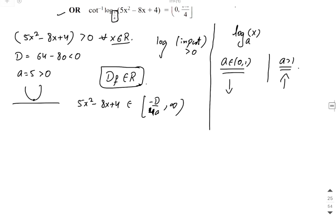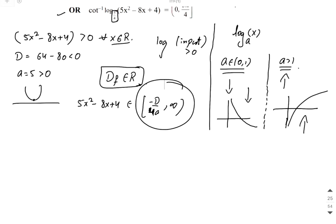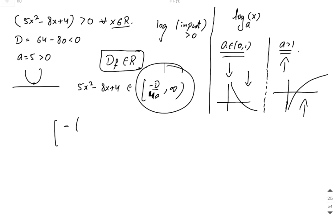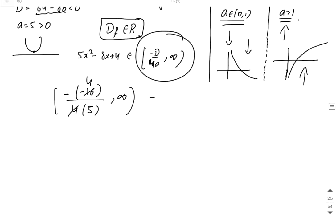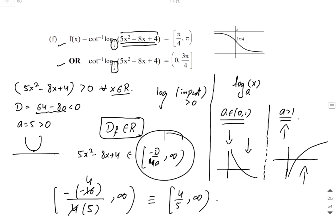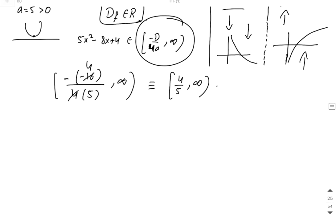The minimum value of the quadratic is minus D by 4a. With discriminant D equal to minus 16, this gives minus of (minus 16) divided by 4 times 5, which equals 4/5. So the quadratic ranges from 4/5 to infinity. For question (a), the base of the log is 4/5. The log input ranges from 4/5 to infinity.